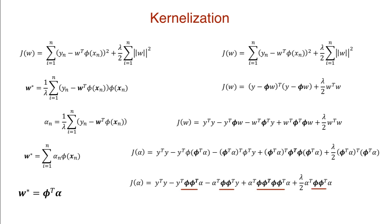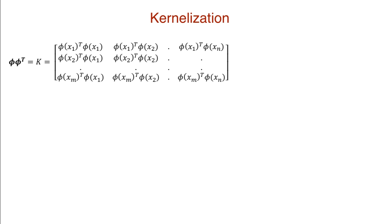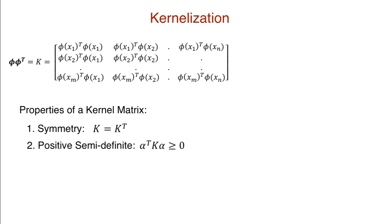The repeated term is phi phi transpose, which is a square matrix called the gram matrix or kernel matrix, denoted by k. Now we're getting to the juicy stuff. The kernel matrix phi phi transpose has elements that are the dot products for every pair of feature vectors. This kernel matrix is of significance because of two properties. One, it's symmetric, so the matrix equals its transpose. And two, the kernel matrix is positive semi-definite, so the product with any other vector and its transpose leads to a non-negative solution. I'll come back to why these properties are important in a bit.